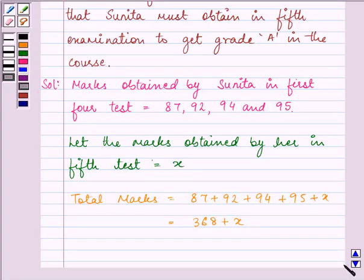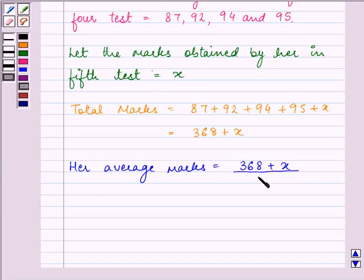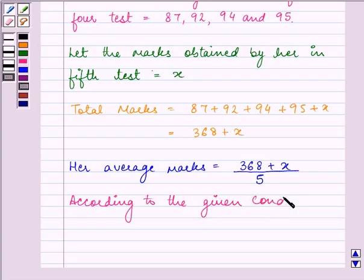Now, her average marks will be equal to 368 plus X divided by 5 as there are 5 tests. So, according to the given condition, her average marks should be 90 or more than that.